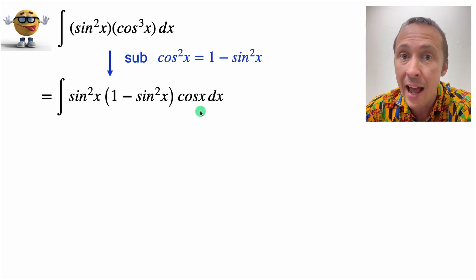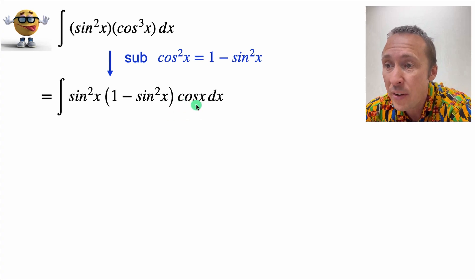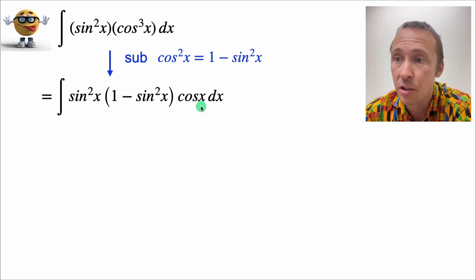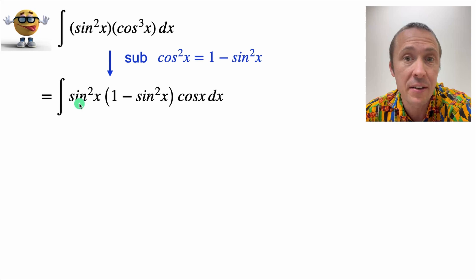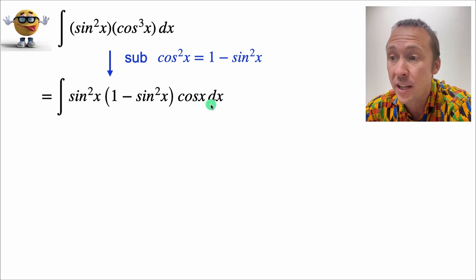Now this looks more complicated but it's actually not because we've left one of the cosines here. So we turned everything into sin except for one of the cosines and the reason is because the derivative of sin x is cos x.